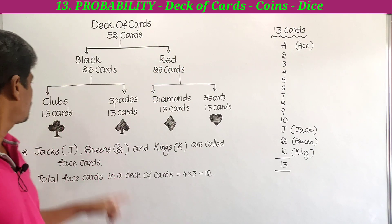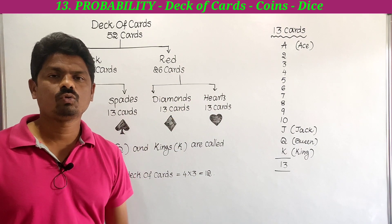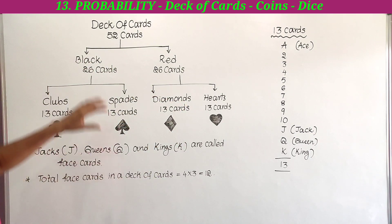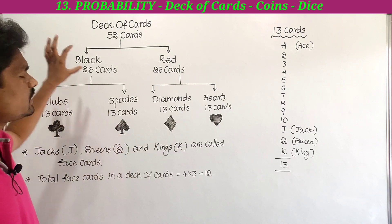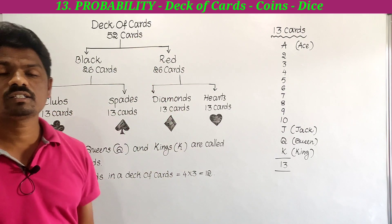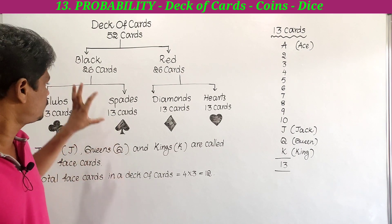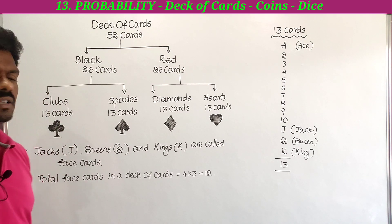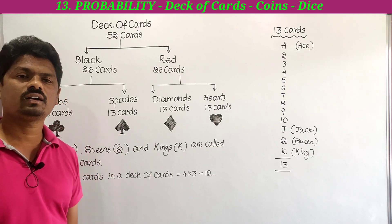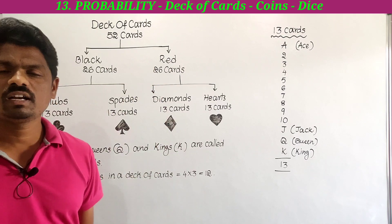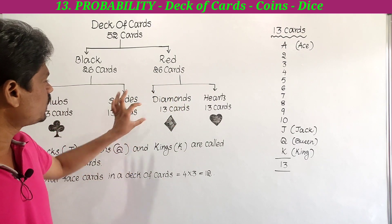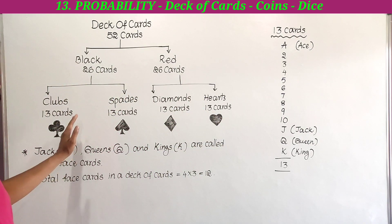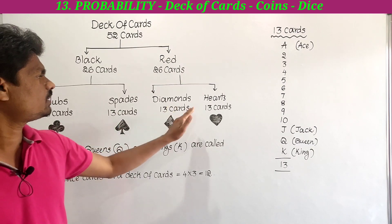Total cards are 52. Black color cards are 26, red color cards are 26. Clubs are 13 cards, spades are 13 cards — both in black. Red diamonds are 13 cards, red hearts are 13 cards. So 13 plus 13 plus 13 plus 13 again gives us 52 cards.